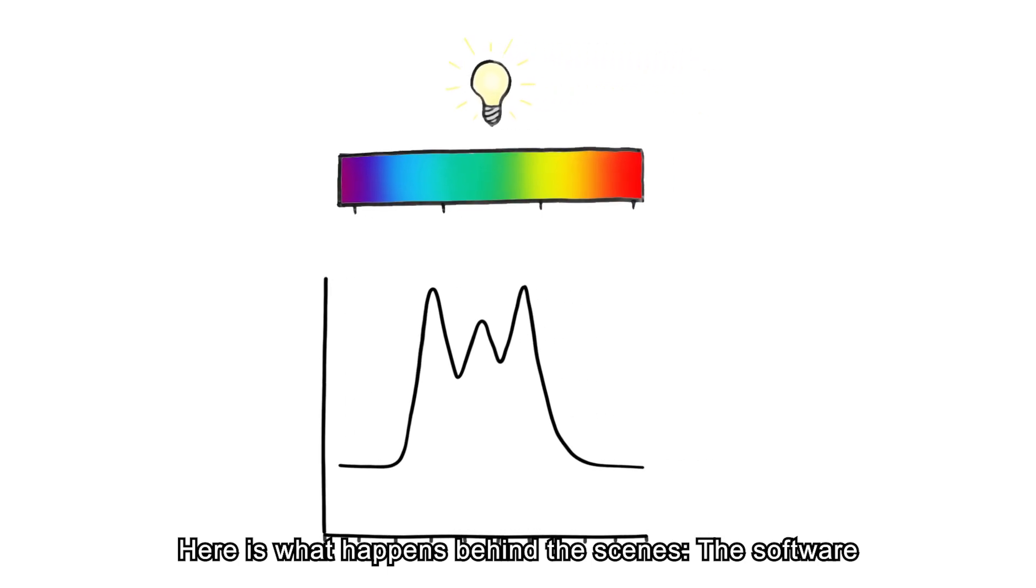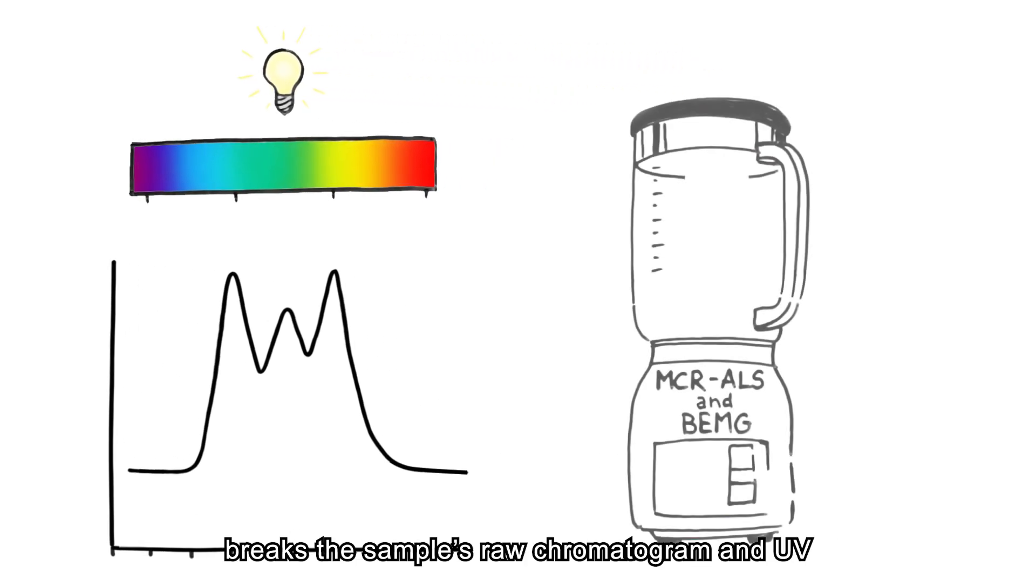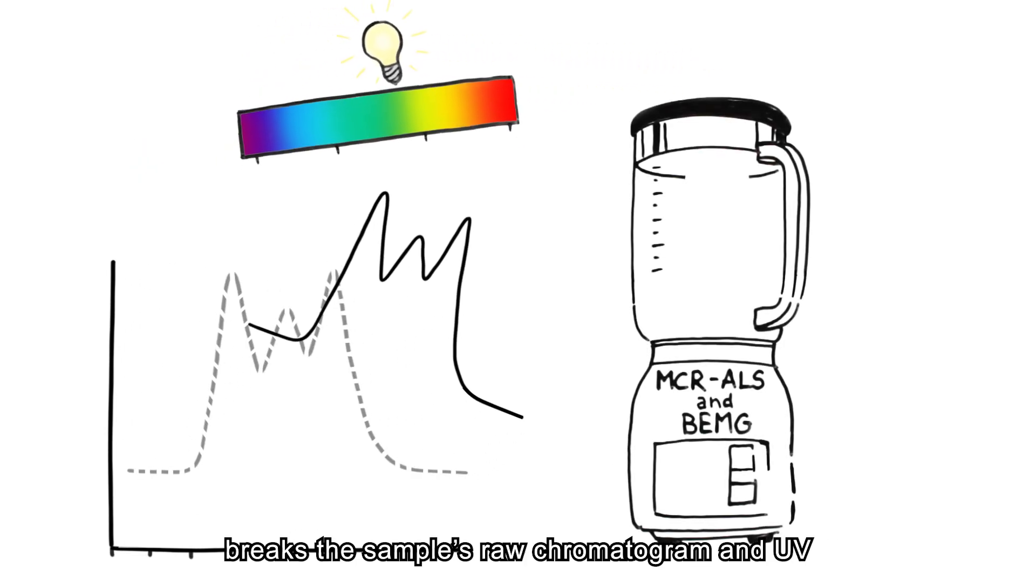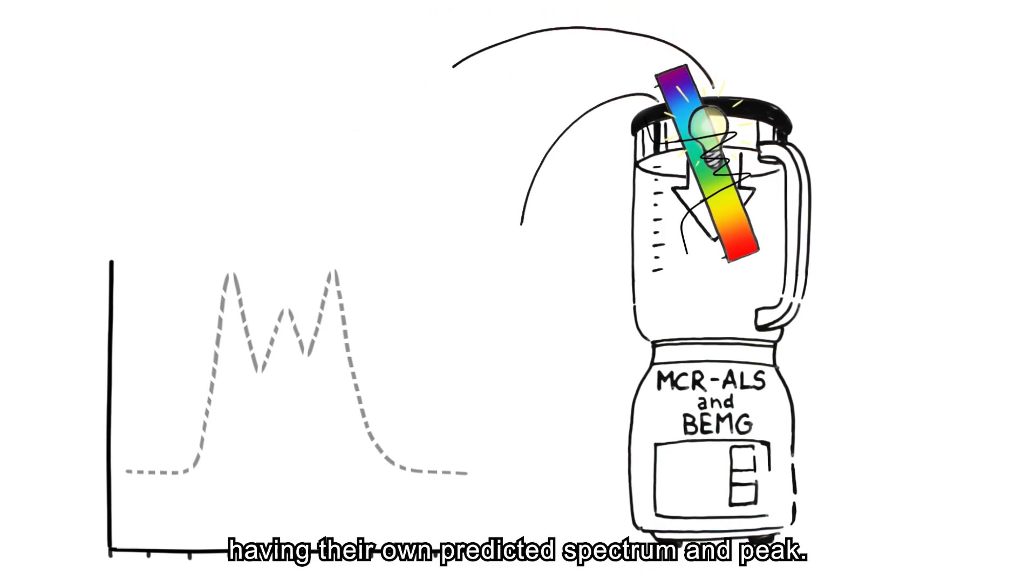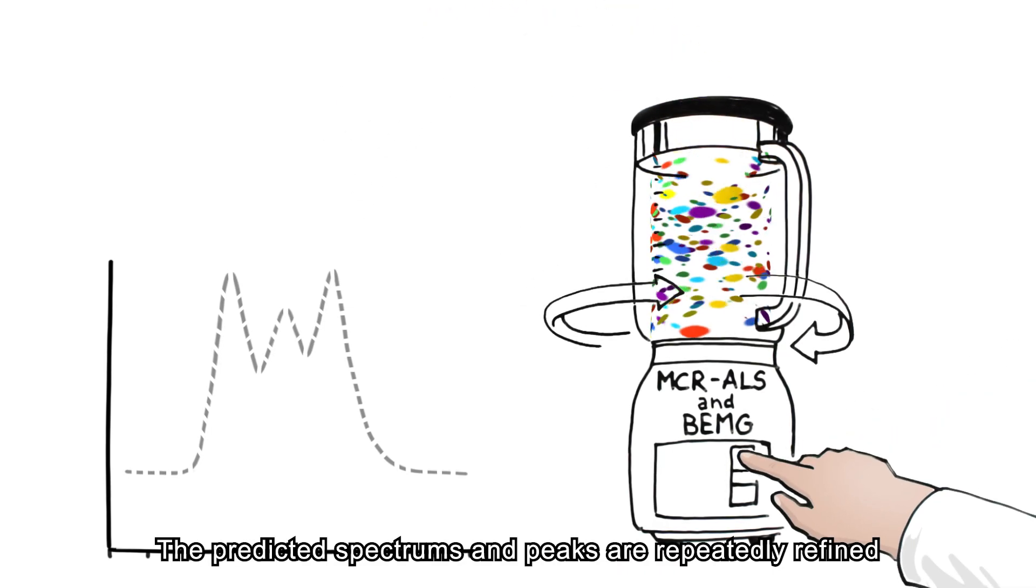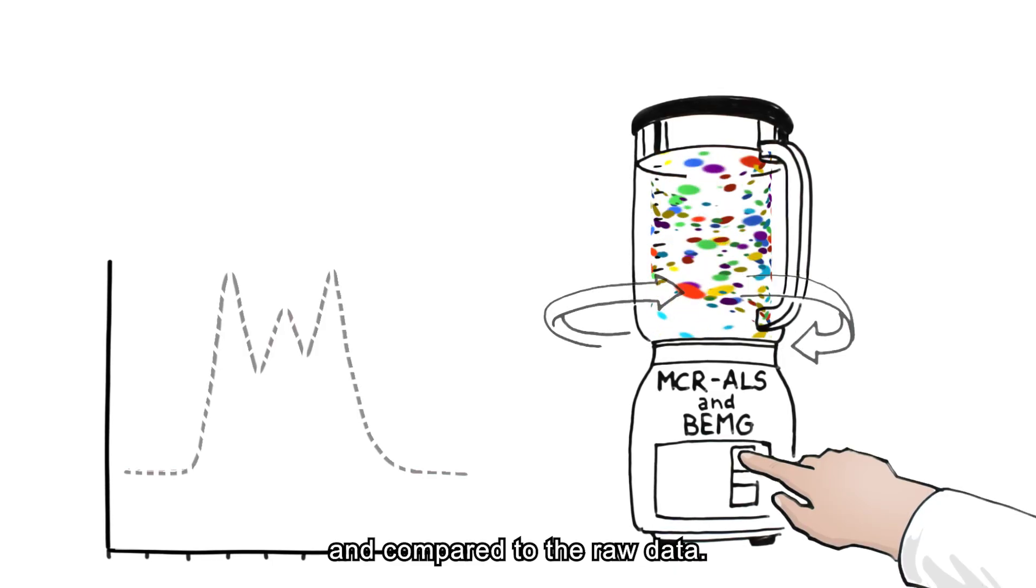Here's what happens behind the scenes. The software breaks the sample's raw chromatogram and UV spectrum down into individual components, each having their own predicted spectrum and peak. The predicted spectrums and peaks are repeatedly refined and compared to the raw data.